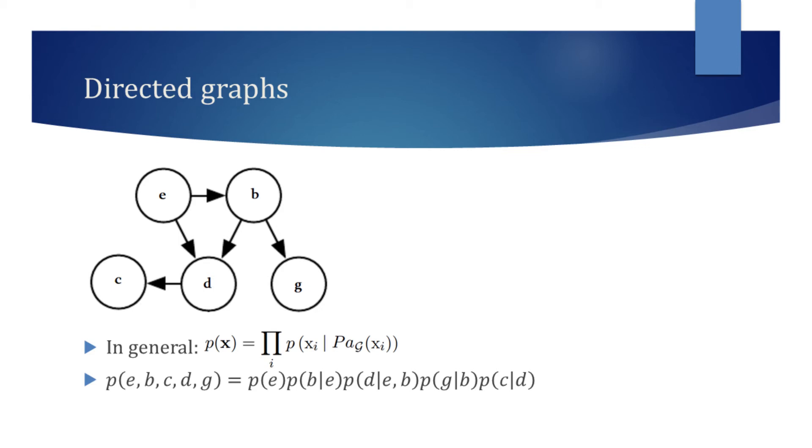Node g has a parent b, so we write the probability of g given b. The parent of the node c is d, so we write the probability of c given d. We should now have an understanding of how to interpret directed models. Let's now have a look at an undirected model.